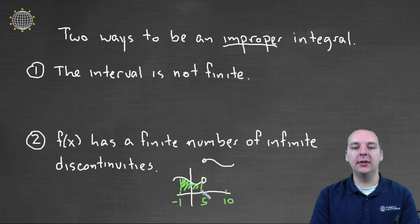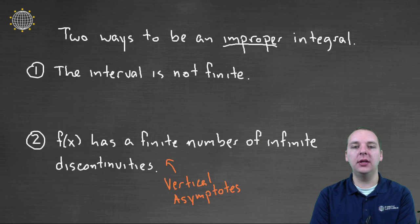You would integrate from negative one to five, and then the rest of the way from five to ten, and then add those answers together. So really the only interesting ones that would make it improper would be an infinite discontinuity. Now what do I mean by an infinite discontinuity? What we're really talking about here is vertical asymptotes. That's the way that we're intending to mean an infinite discontinuity.